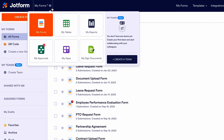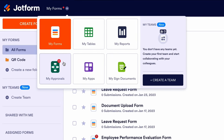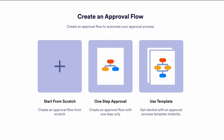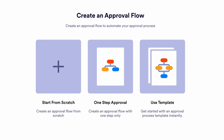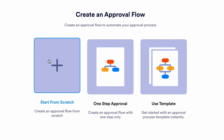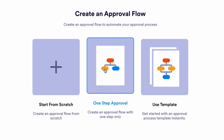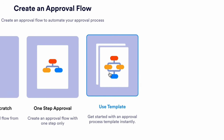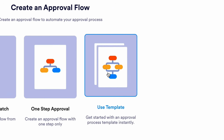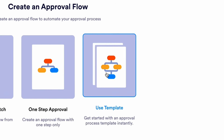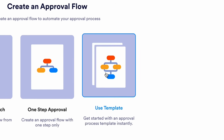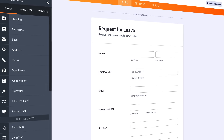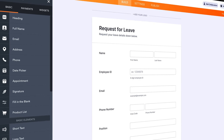First, go to My Approvals from the My Forms page. Next, click the Create Approval button at the top left. You'll now be asked to choose from one of three options: Start from Scratch, One Step Approval, or Use a Template. Let's choose Use a Template so we can go over some of the basics and give you a better understanding of how forms complement an approval workflow. Our Leave Request Approval template is bundled with a Request for Leave form, so let's go with that one because it's nice and simple.